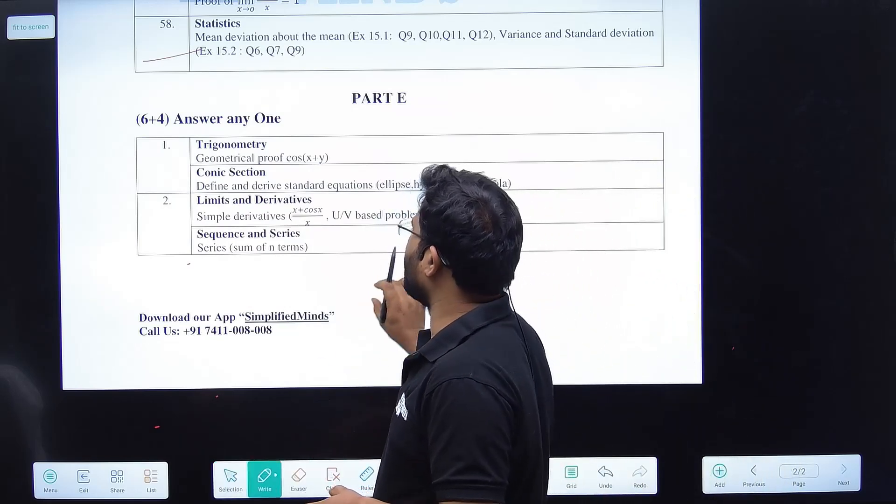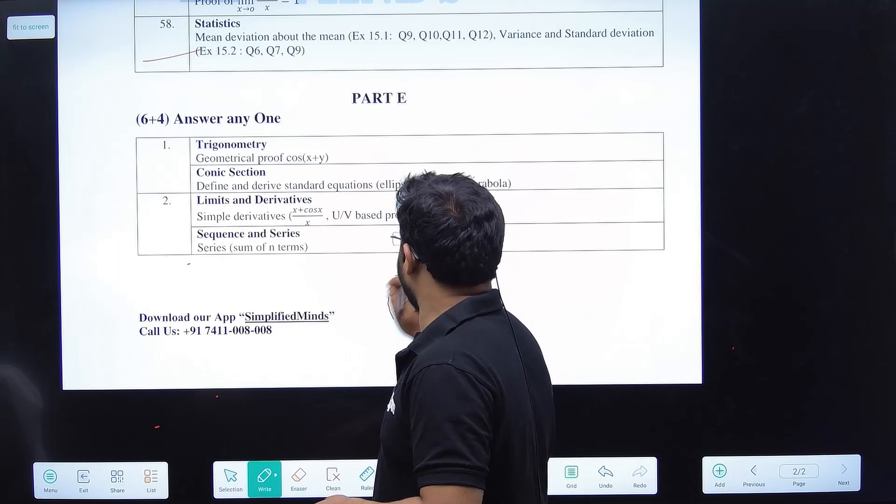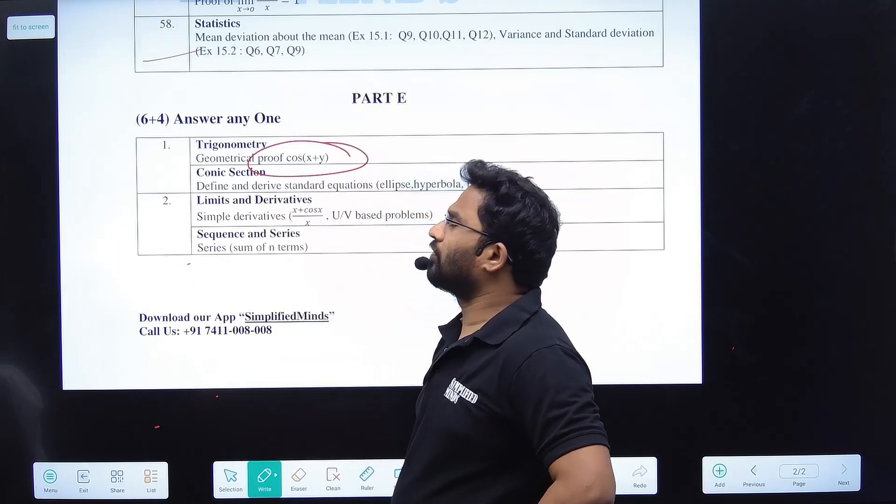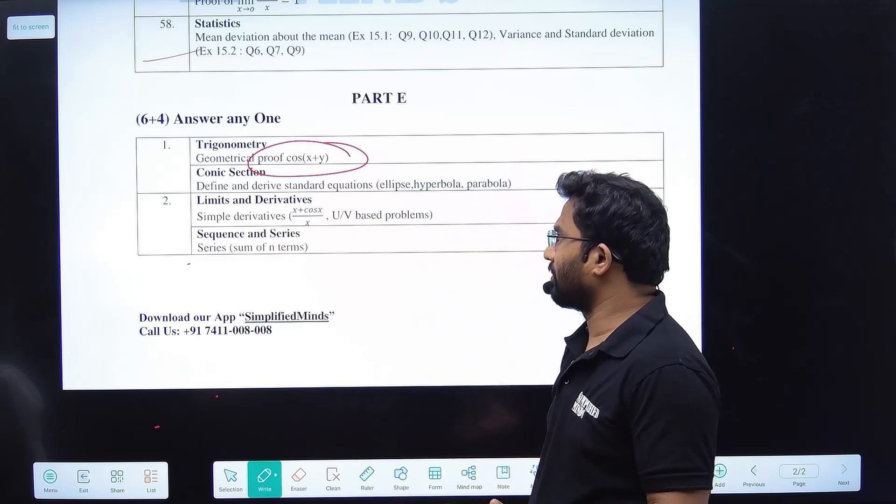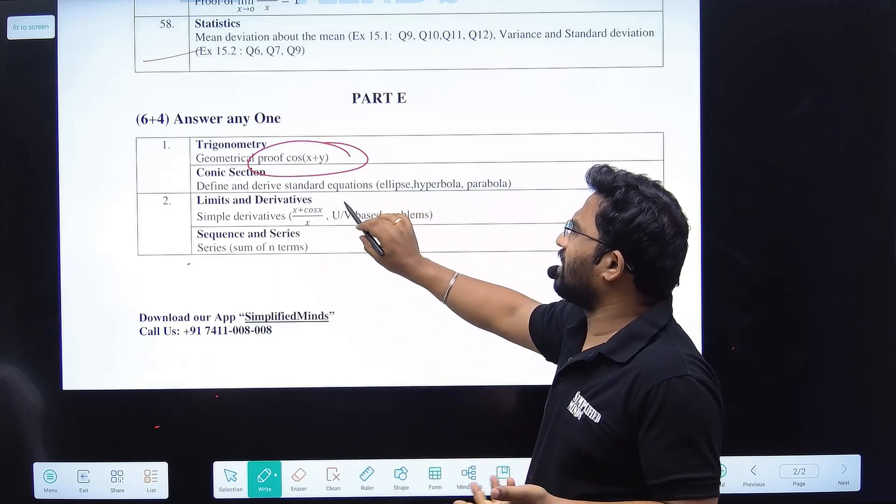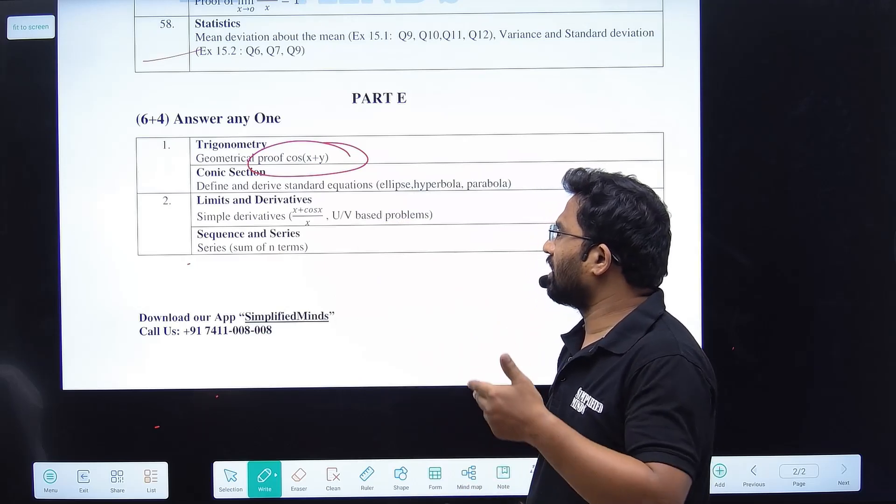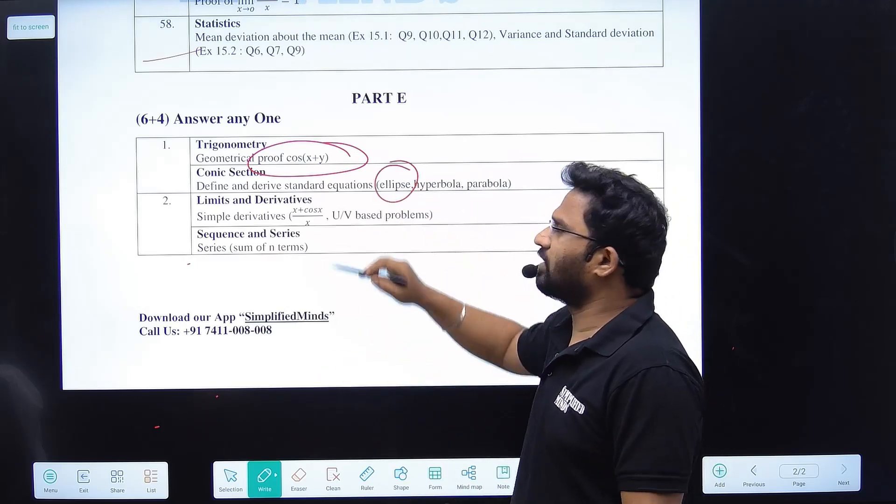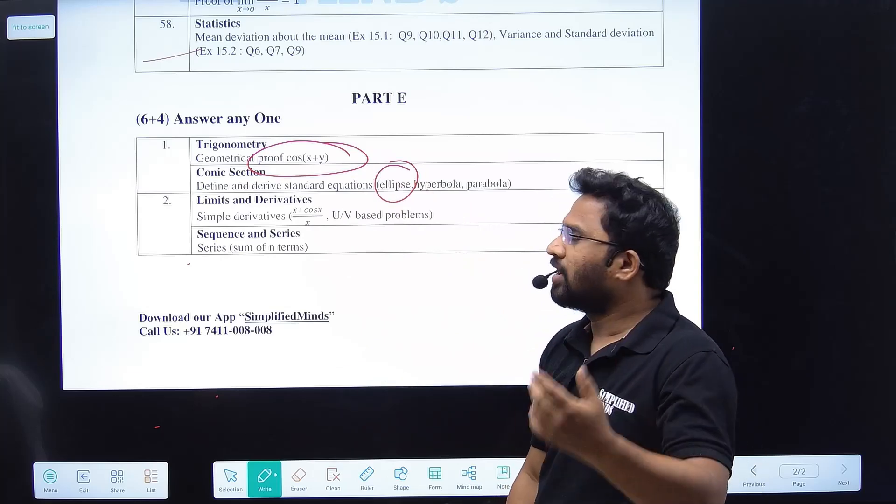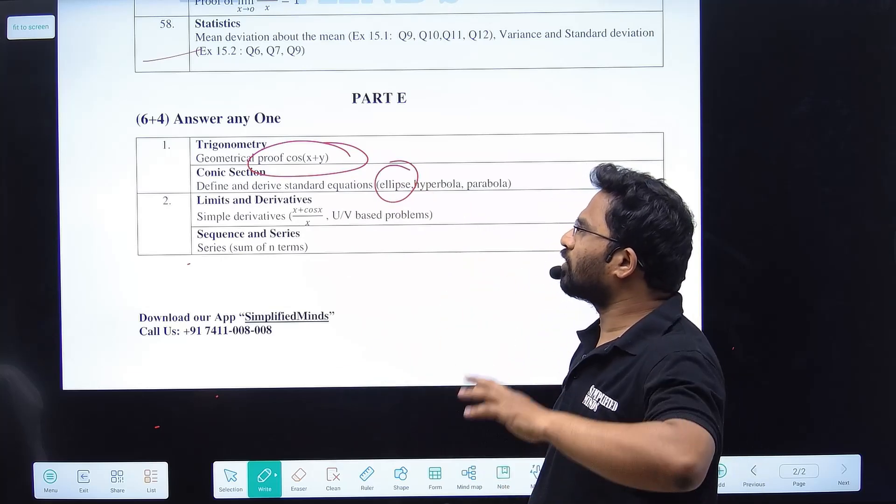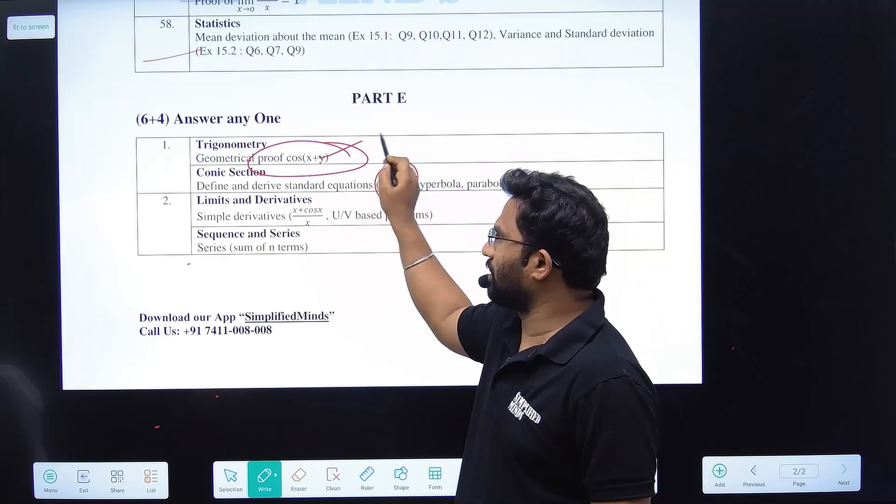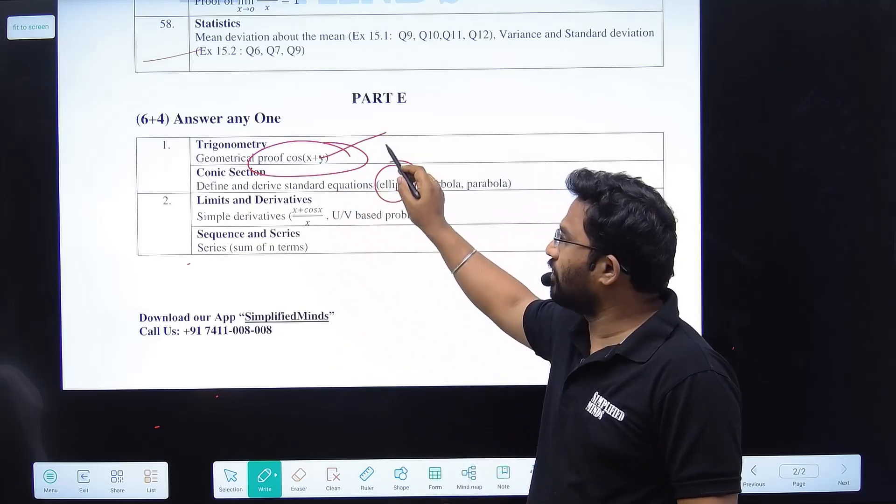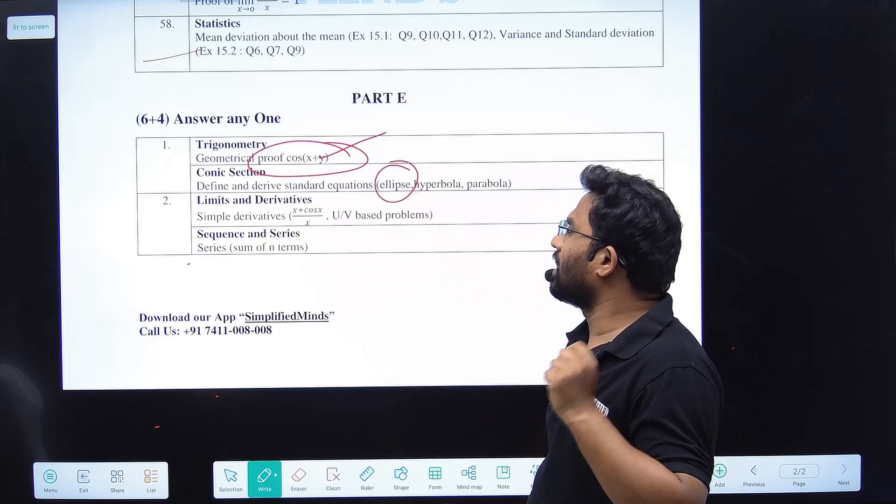Part E - I have seen every time the same proof, proof of the geometrical proof for cos of x plus y equation. Usually standard derivation. Conic sections - define and derive standard equations for the ellipse. Ellipse is very important, asked maximum number of times. They can ask even other questions also, but do all these questions prepared. This is any one question, so 6 marks.